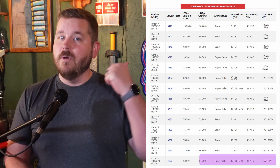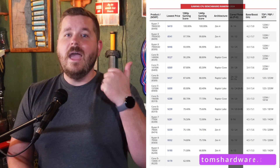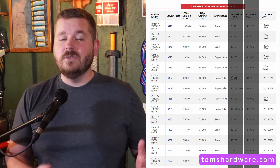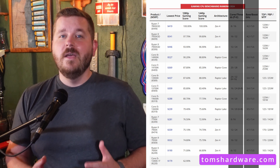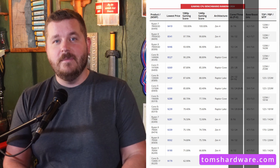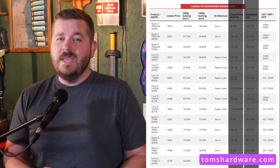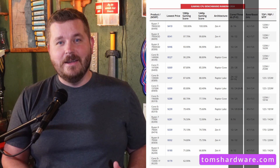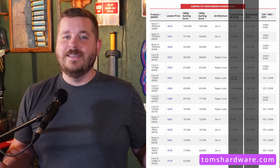When it comes down to it, there are two things that you really need to pay attention to with the CPU: the number of cores and the speeds of those cores. The more cores your CPU has, the more it can juggle without dropping anything. The higher the speeds of each core, the faster it can get those things done. Easy enough, right?